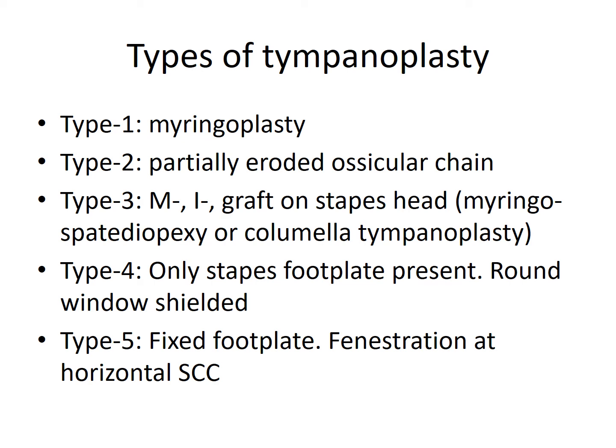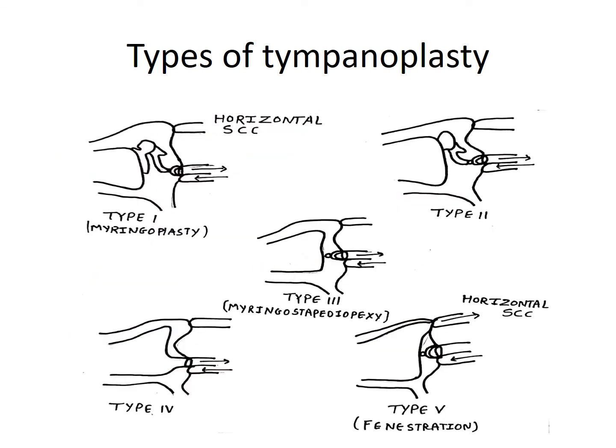This figure explains the different types of Tympanoplasty. In Type 1, the ossicular chain is normal so only a graft is placed. In Type 2, there is a partially eroded ossicular chain. In Type 3, we can see Myringostapediopexy — Malleus and Incus are absent but the Stapes superstructure or head is present where the graft is placed. In Type 4, even the superstructure is absent, so the Stapes Footplate is exteriorized and the Round Window is shielded with a graft. In Type 5, the Stapes Footplate is fixed, so a separate window at the Horizontal Semicircular Canal is created and a graft is placed over it, acting as an Oval Window.